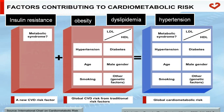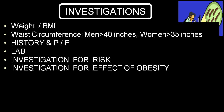Factors contributing to insulin resistance include obesity, dyslipidemia, and hypertension — characteristic of cardiometabolic syndrome. Once a person is labeled obese, clinical picture is most important. Then investigate for risk factors and the effect of obesity on different organs. Calculate weight, BMI, and waist circumference; take history and physical examination; then go to laboratory parameters.